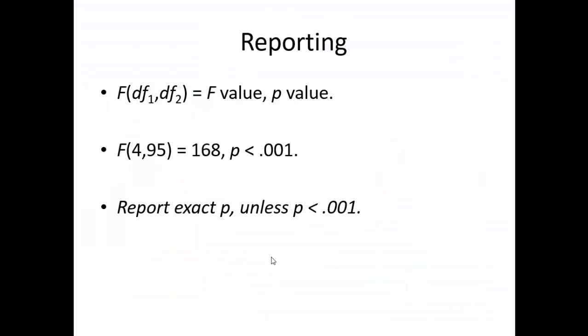We will report the omnibus ANOVA in this manner: f parentheses degrees of freedom comma degrees of freedom parentheses equals f value comma p value. So in this case, f parentheses 4, the degrees of freedom between groups comma 95, the degrees of freedom within groups, parentheses equals 168, which is the f value, and our p is less than 0.001. Remember, when reporting a p-value, write the exact value of p, unless it is less than 0.001. If this is the case, just report it as p less than 0.001.